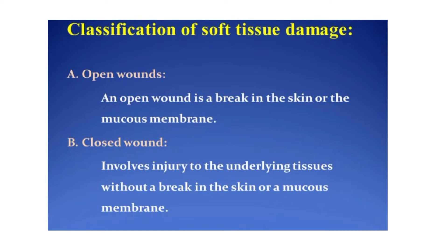Next, we come to the classifications of soft tissue damage, or types of wound. First is the open wound. An open wound is a break in the skin or the mucous membrane. A closed wound involves injury to the underlying tissues without a break in the skin or mucous membrane.